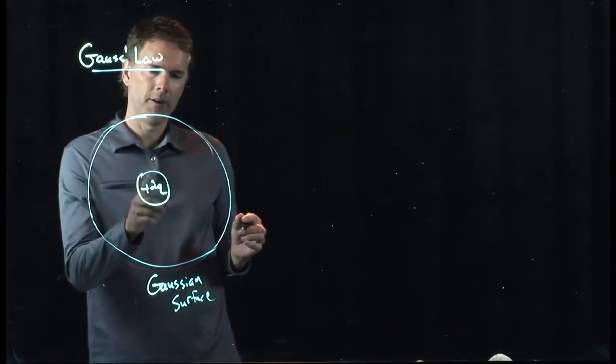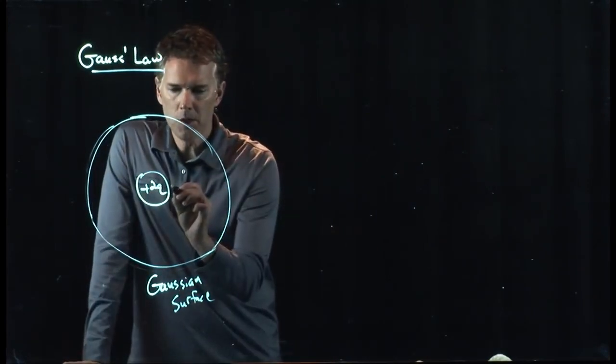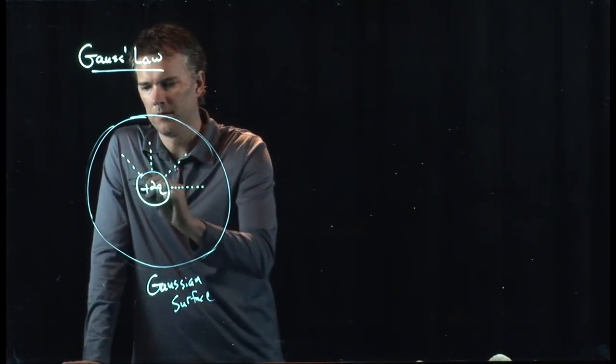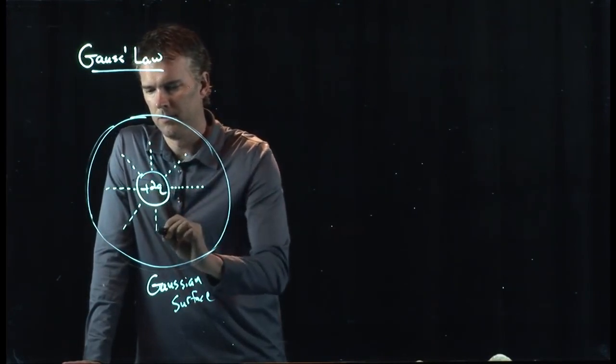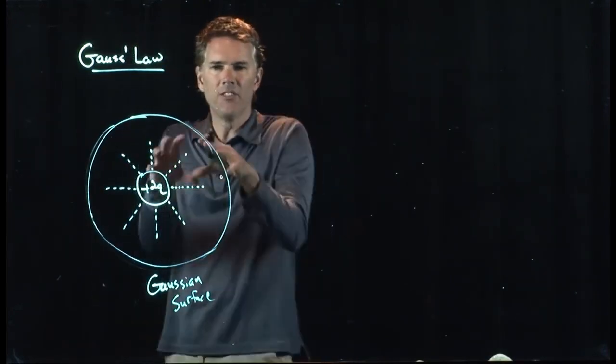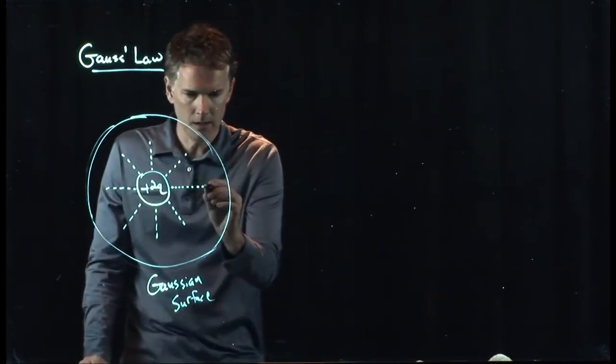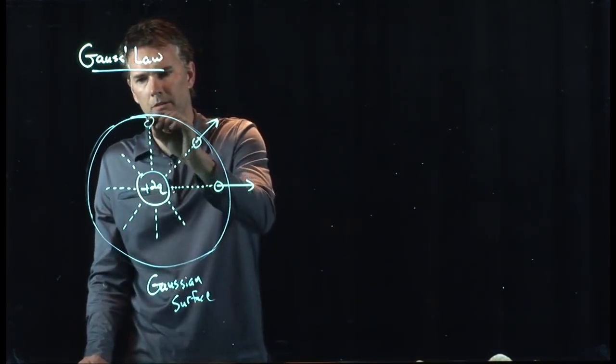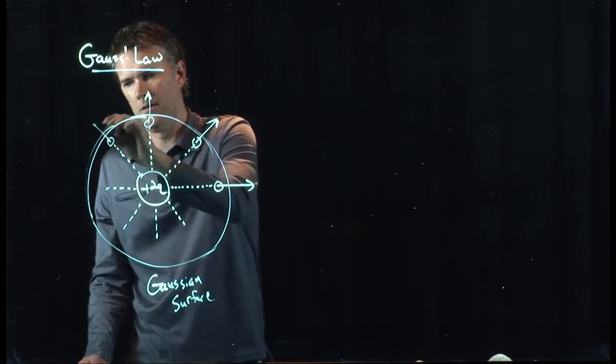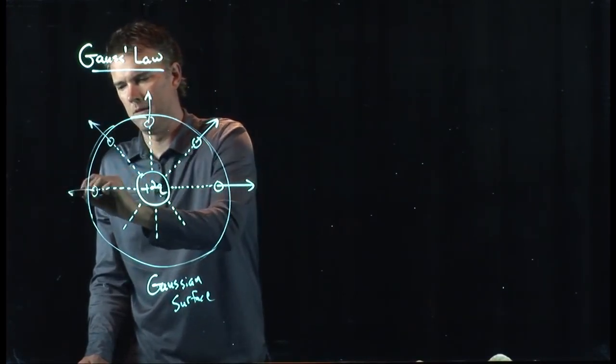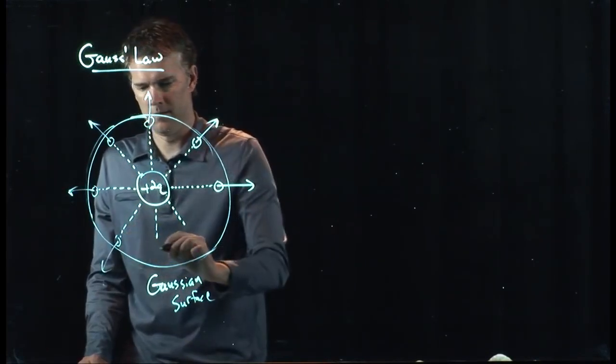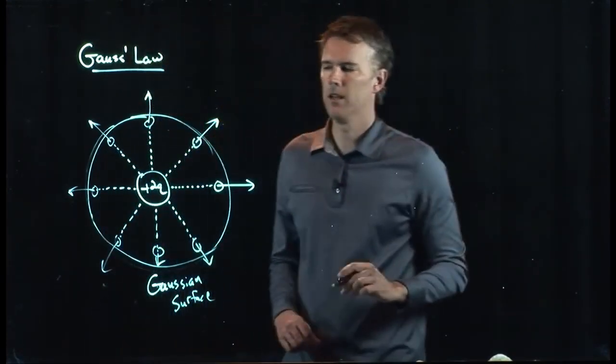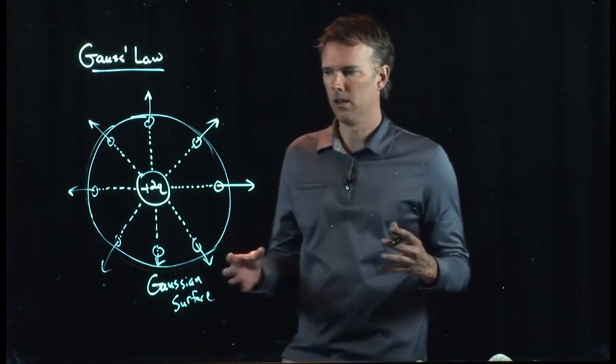Well, let's see if we can figure out what's happening inside. What we said was 2q is going to give us eight field lines. So I'm drawing them with dashes because they're inside the sphere. But eventually, they're going to poke right on out. And here they come out of the sphere.